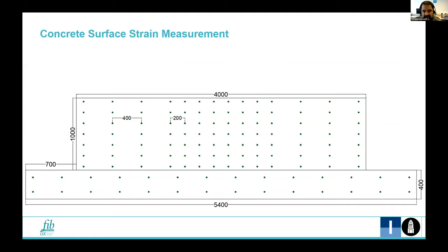In order to measure the concrete surface strains, demountable mechanical gauges are fixed on the wall. A coarser mesh, a coarser grid is used towards the ends, and the finer mesh, finer grid is used in the central part.